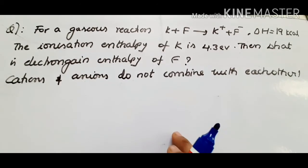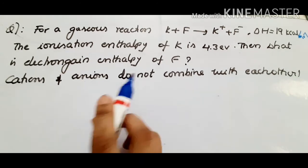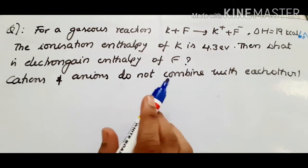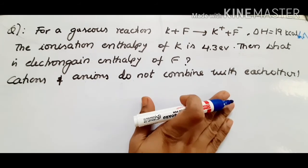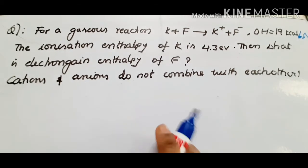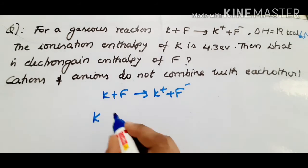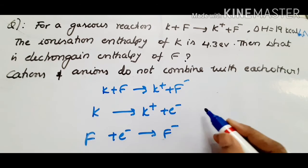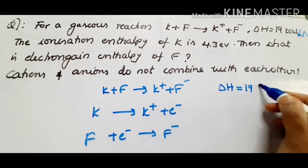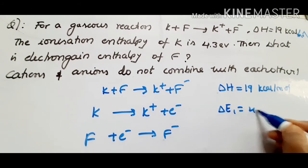Next question: for the gaseous reaction K + F → K⁺ + F⁻, ΔH = 19 kcal/mol, and the ionization energy of potassium is 4.3 eV. Find the electron gain enthalpy of fluorine, given that cations and anions do not combine. Write two partial equations: K → K⁺ + e⁻ (IE = 4.3 eV), and F + e⁻ → F⁻ (EGE = unknown). The overall ΔH = 19 kcal/mol is given.